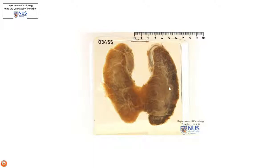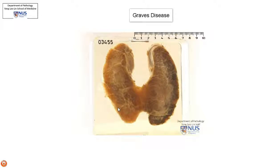The commonest cause of a diffuse goiter which has got a very dark brownish appearance would be Graves' disease. So this is an example of Graves' disease.